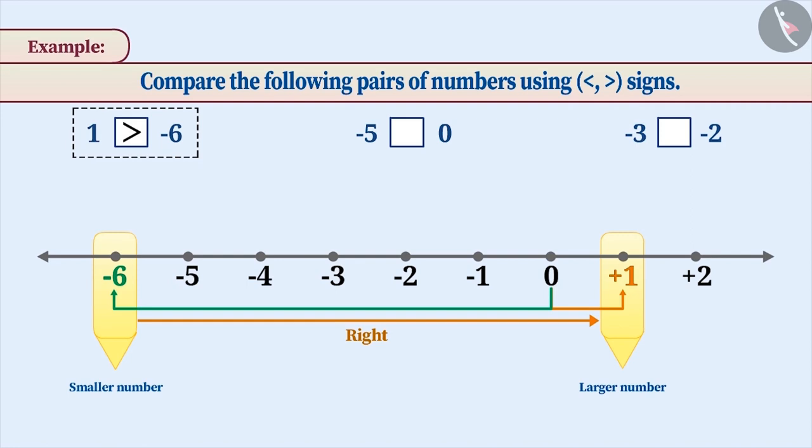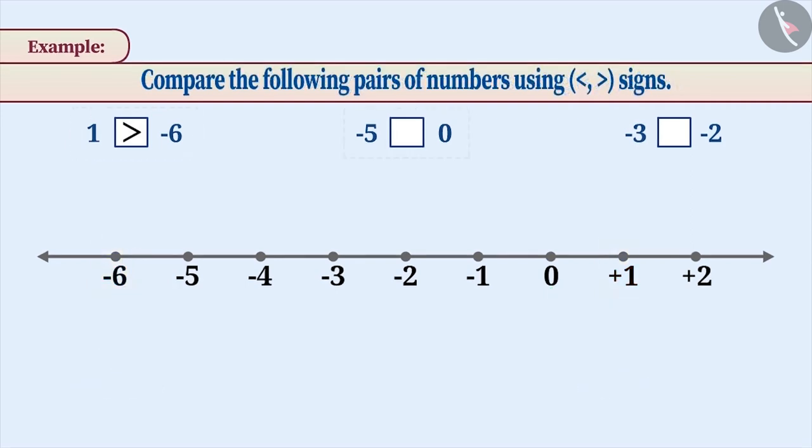Similarly, let's compare minus 5 and 0 on the number line. The number minus 5 is marked 5 places to the left of 0. Since minus 5 is to the left of 0, minus 5 is the smaller number and 0 is the larger number.